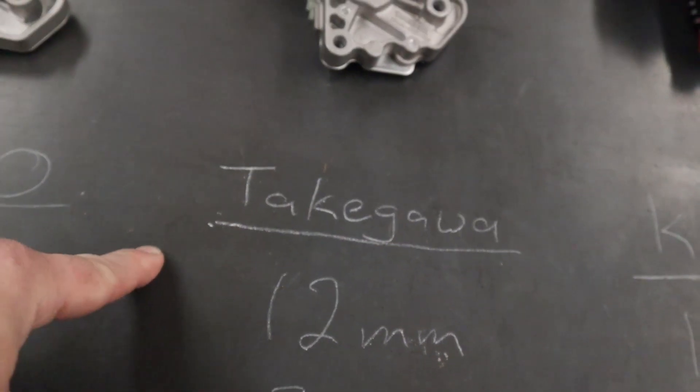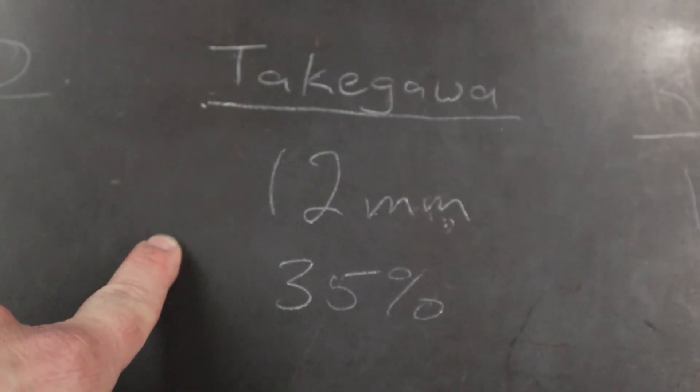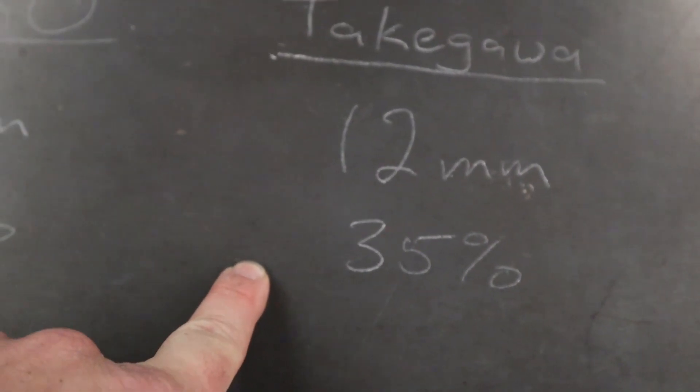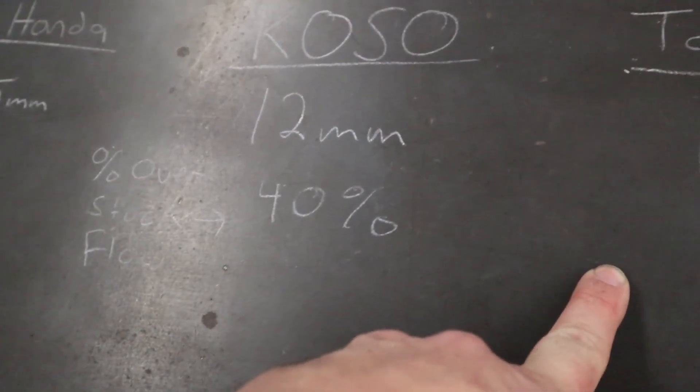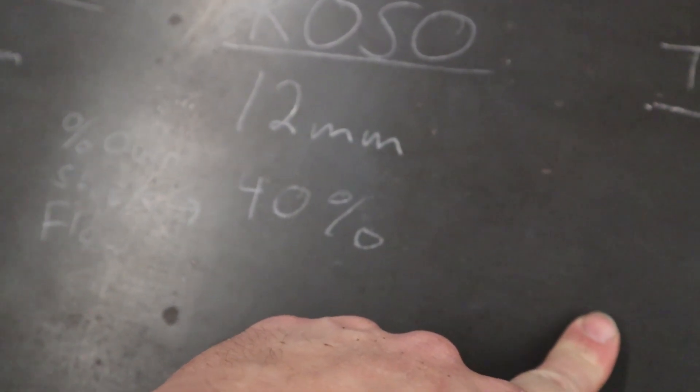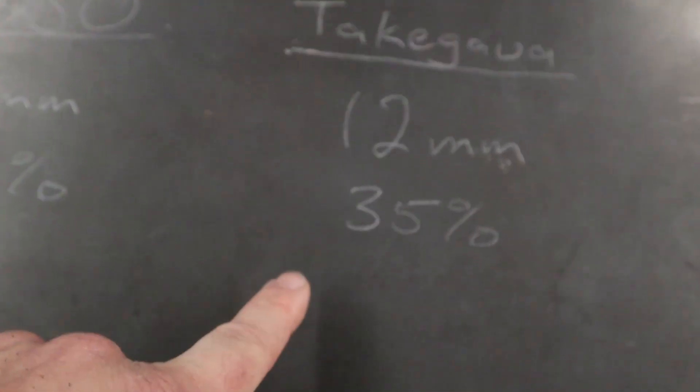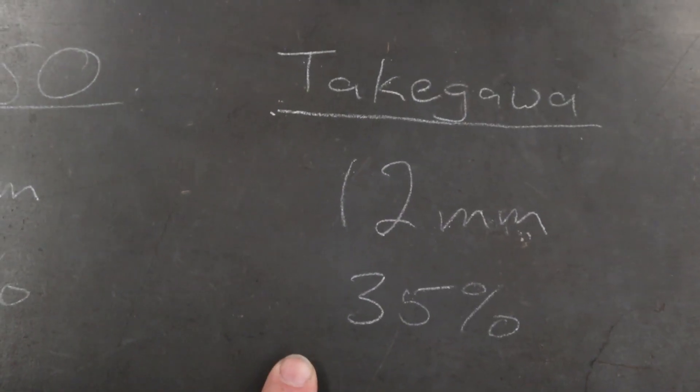Next, Takagawa, my favorite. Also 12 millimeter, remember? But they only claim 35%. I think Koso is full of shit, and their marketing department decided to inflate the numbers. Let's round it up to 40, hey, more people buy them. Whatever. I think this is more accurate. 35% is the claimed flow over stock.